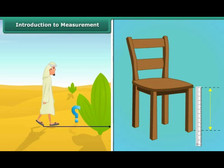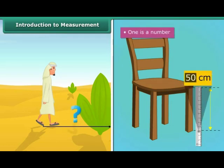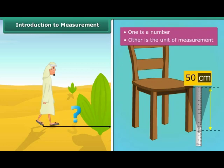When you derive the results of this calculation, you get the measurement in two parts. One is a number and the other is the unit of the measurement.